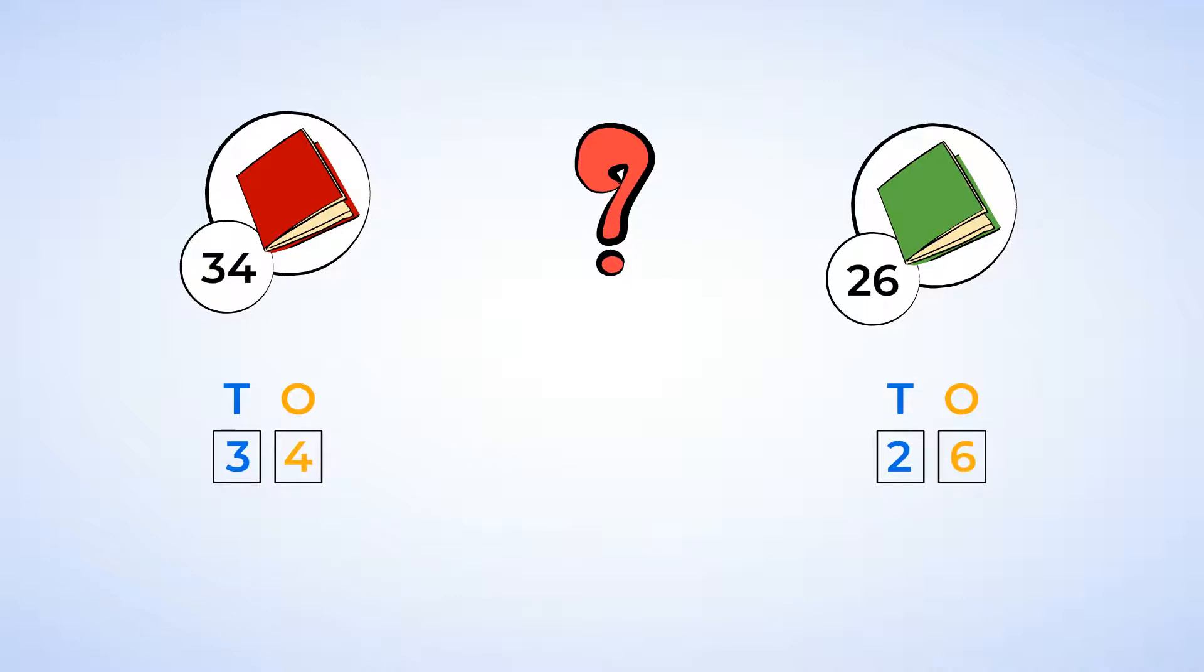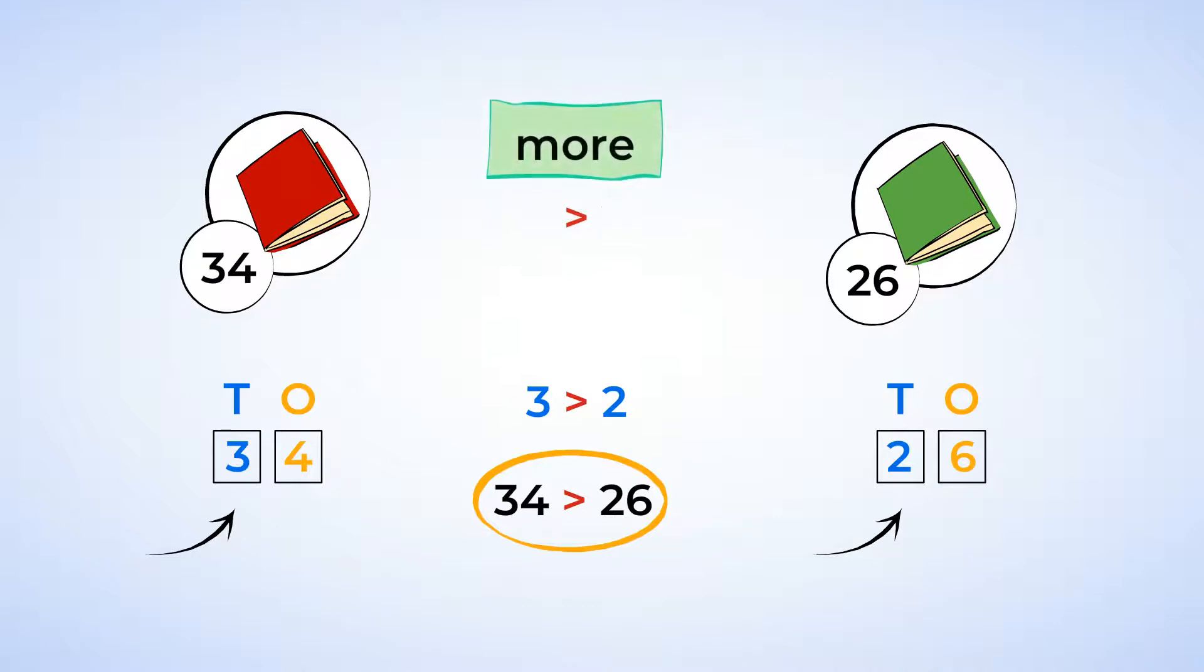Just like when you read a book, you go left to right. First, compare the tens. The number 34 has 3 tens. The number 26 has 2 tens. 3 tens is more than, or greater than, 2 tens. Because tens are worth more than ones, we don't even need to compare the ones place. 34 is greater than 26. This book has fewer pages, and this book has more pages.